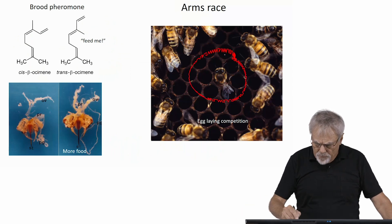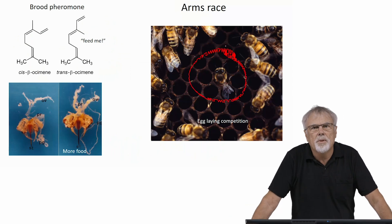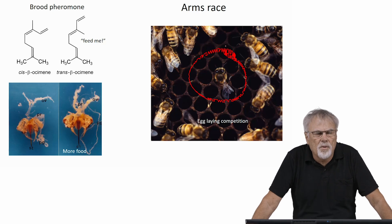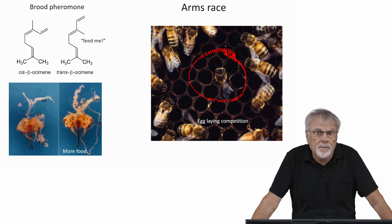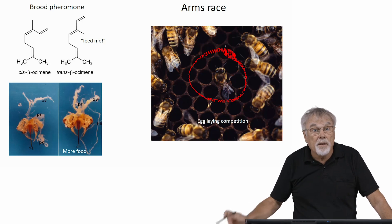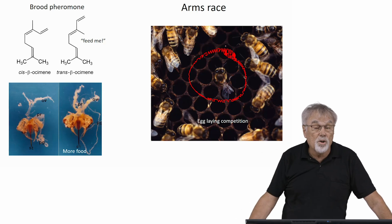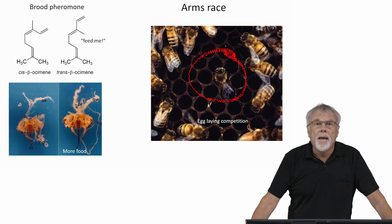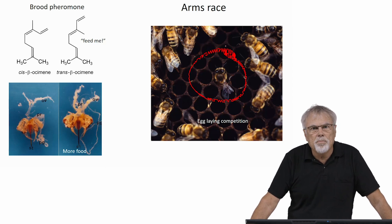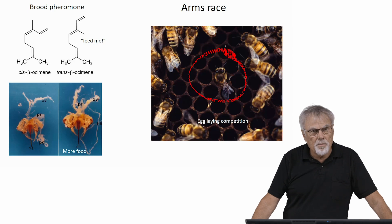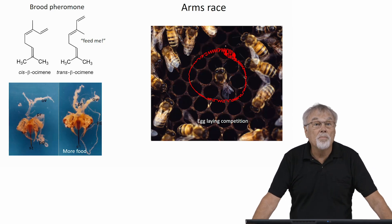Workers, even though they have very small ovaries, are still capable of reproducing. They can lay eggs, and the eggs they lay give rise to drones — males. Workers are not mated, and unmated female honeybees can lay infertile eggs that develop into haploid males. In another module, haplodiploidy and how it occurs is discussed.